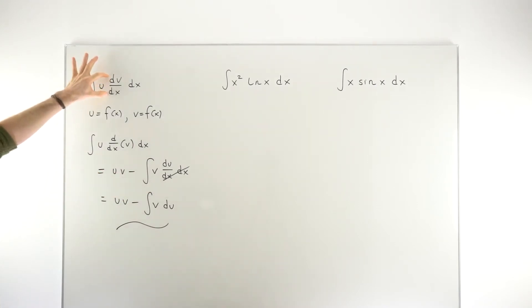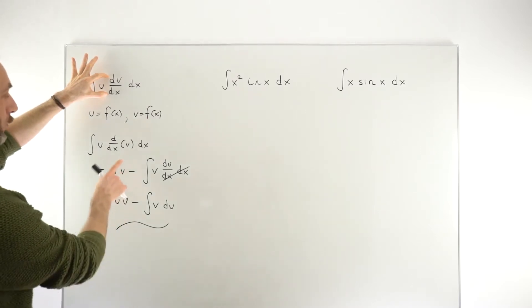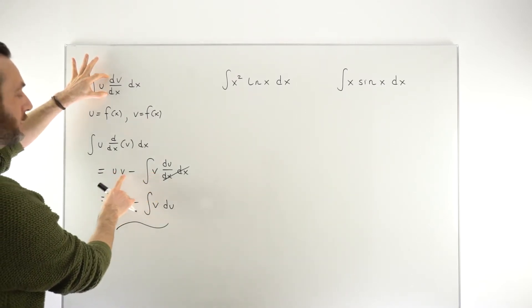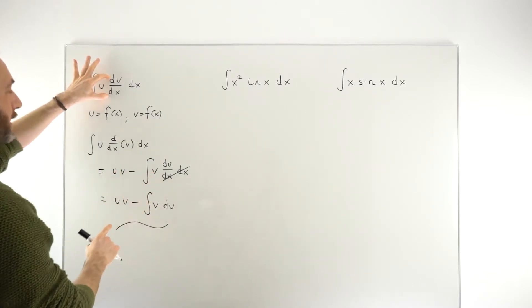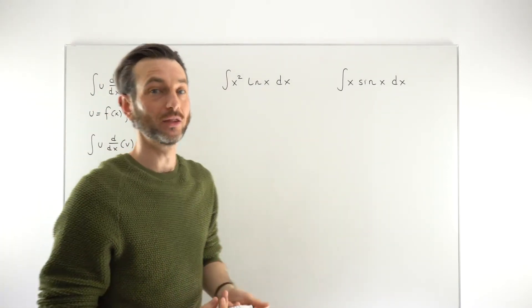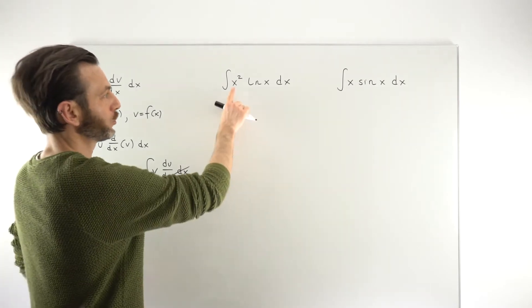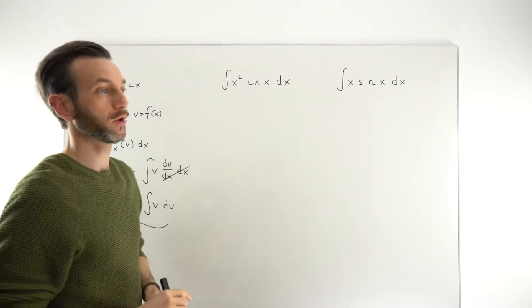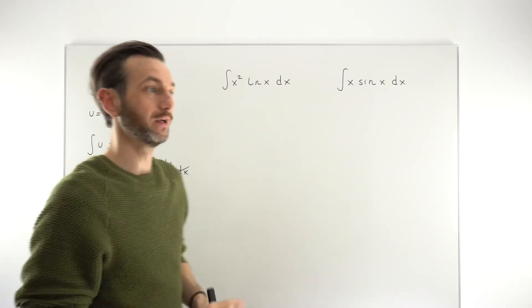So notice that you want your v function, sorry, your dv function to be something that you can integrate because later on, we're using v, not dv. So we want to go from dv to v. In other words, to get from dv to v, you need to integrate the dv function. So you want to choose one of these to be dv such that you know you can integrate it.